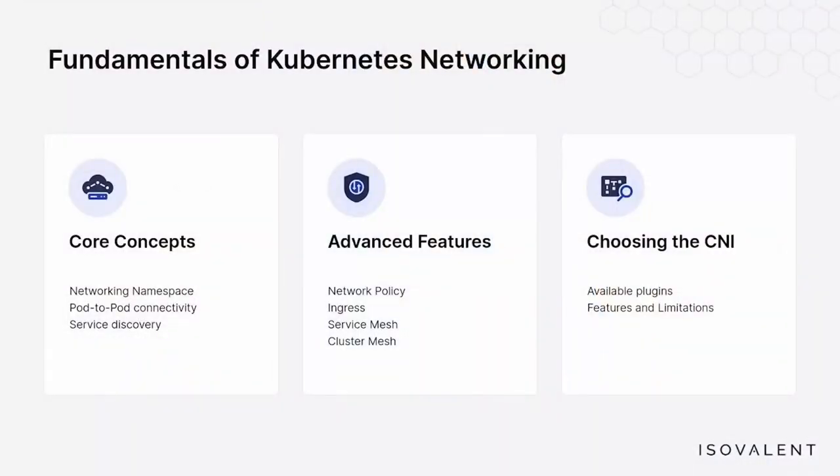Networking plays a central role in connecting our Kubernetes services between each other and to the world, and there's a lot that we can tweak and customize. We definitely won't be able to cover everything there is to know about Kubernetes networking here, but we should cover enough for you to have a basic understanding of what's going on inside your cluster's network. We'll first do a quick introduction of the fundamental concepts involved, starting from the most basic components like the networking namespace, how pods connect to each other, and how services work inside our clusters. Then we'll build on to some more advanced topics like network policies, ingress, service mesh, and cluster mesh.